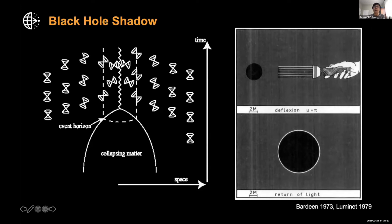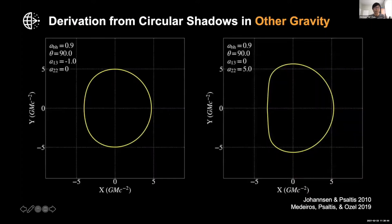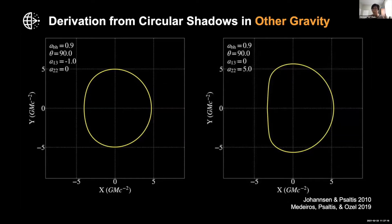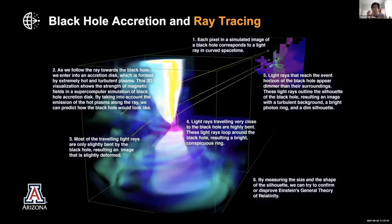If we take this physical picture — light orbiting and coming back to form a ring — depending on the theory of gravity, the shape of this shadow can actually change. There was a paper by Tim Johannsen and Dimitrios Psaltis about 10 years ago describing how if you change the gravity theory and the spacetime, the photon ring we are seeing will have a different shape. Leo Medeiros recently has a paper on how to parametrize this, so imaging this ring gives us a tool to test general relativity in the strong gravity regime.